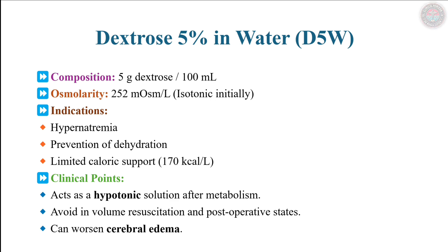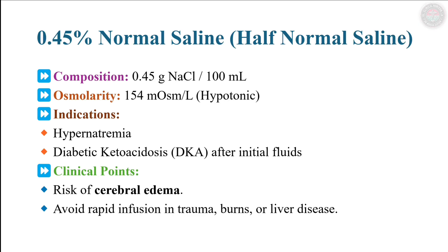Half-normal saline, 0.45% NaCl, is hypotonic with an osmolarity of 154 mOsm/L. It rehydrates cells in hypernatremia or diabetic ketoacidosis after initial isotonic resuscitation. Infuse slowly to avoid rapid shifts in serum sodium. Contraindicated in trauma, burns, or liver disease due to cerebral edema risks.